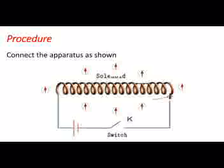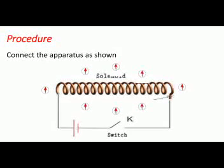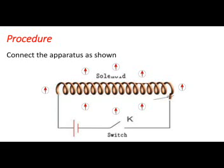We connect the solenoid into a circuit, and at various points around the solenoid, we place the magnetic compass needles. We're also going to watch a short video so that we can see what happens when the solenoid is connected into a circuit. I want us to be attentive and observe what happens.